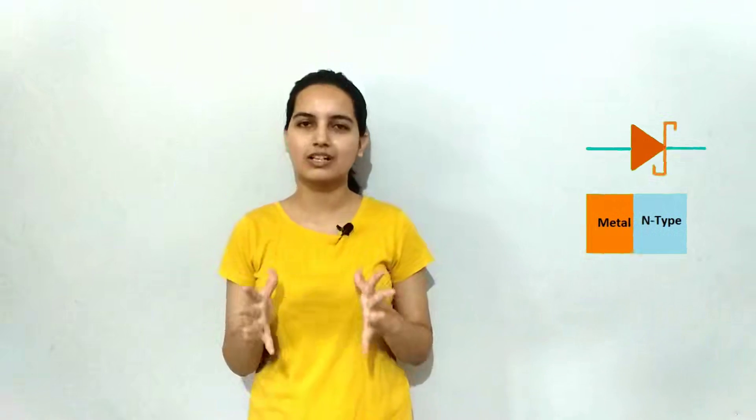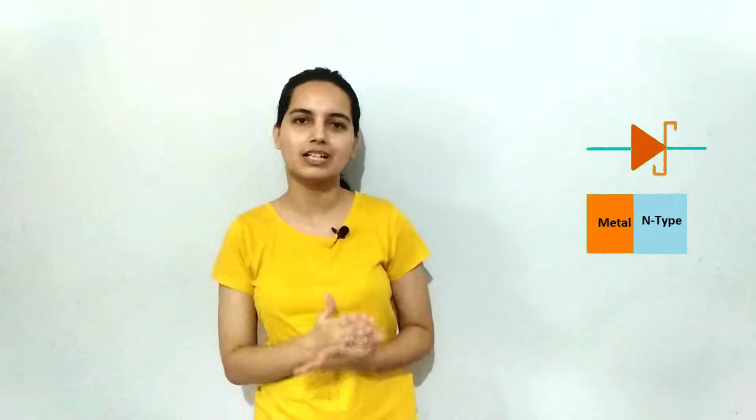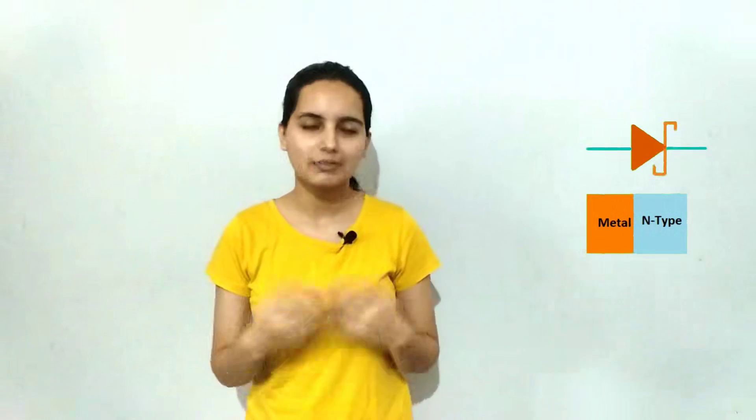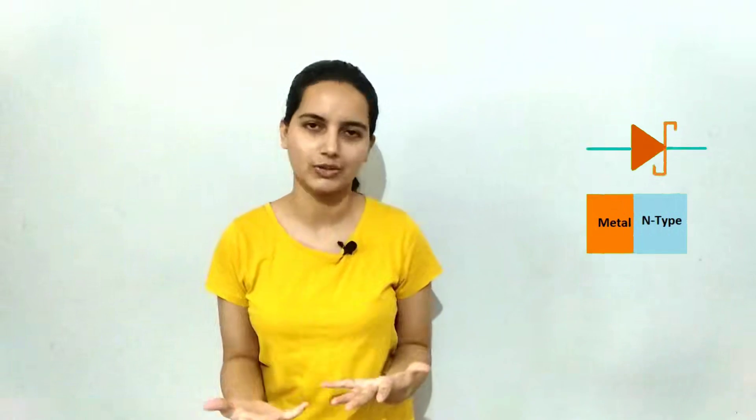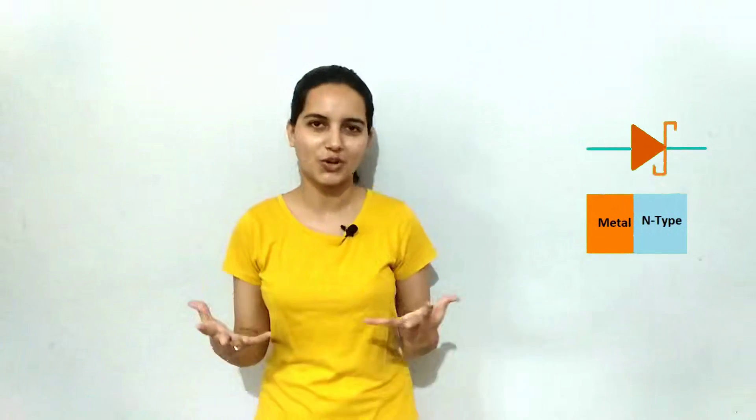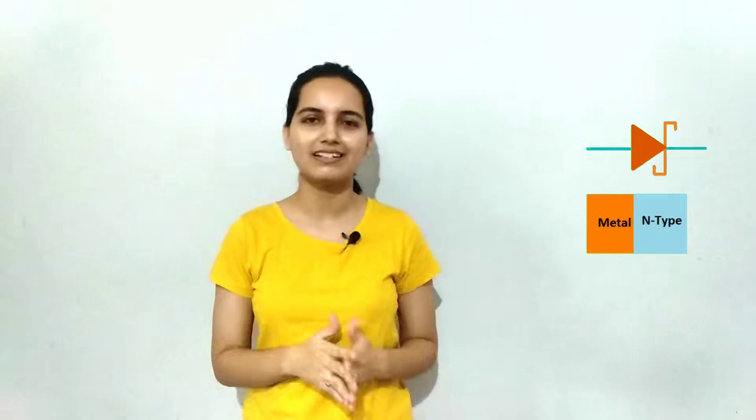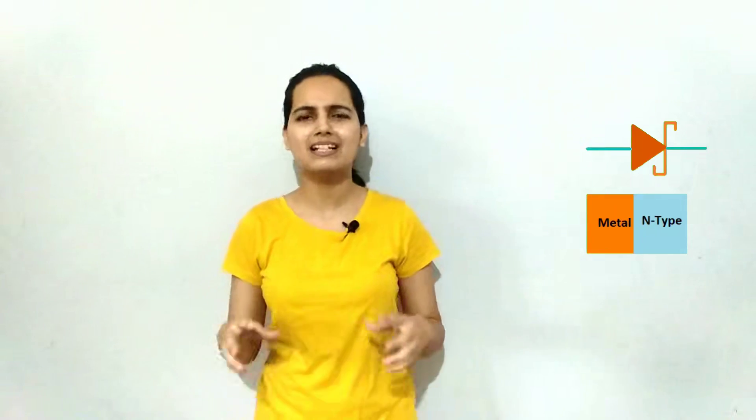Basically, if you put a metal layer with an N-type semiconductor, it becomes a Schottky diode. There is no rocket science — it is simple. If you have a metal layer joined with a semiconductor, that becomes a Schottky diode. Its performance parameters and its whole forward bias and reverse bias behavior revolves around free electrons.